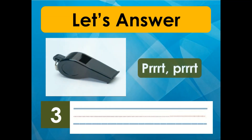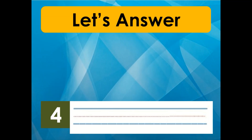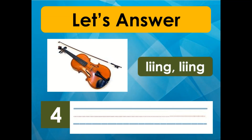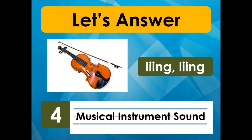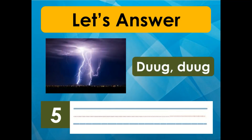Number three — that's correct, it's an object sound. The whistle sound, prrrr, is an object sound. Number four — that's correct, it's a musical instrument sound. The violin sound, ling ling, is a musical instrument sound. And number five — that's correct, it's a nature sound. The thunder sound, dg, is a nature sound.